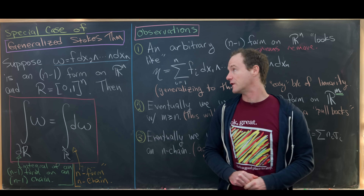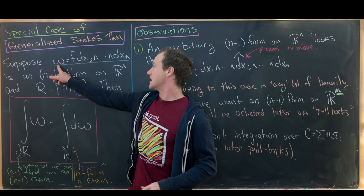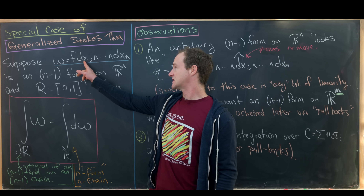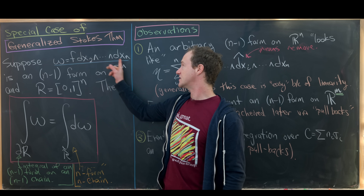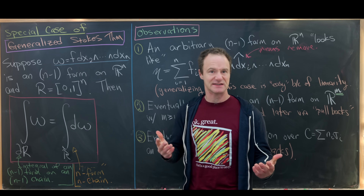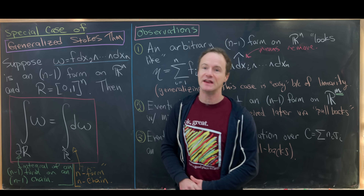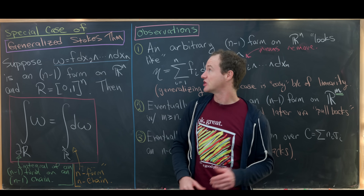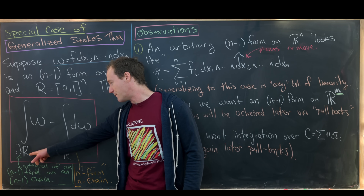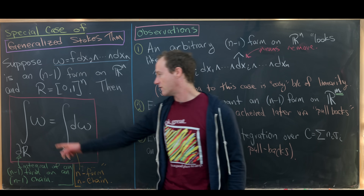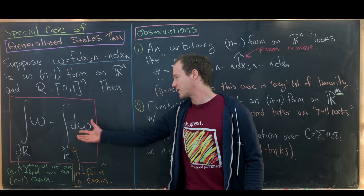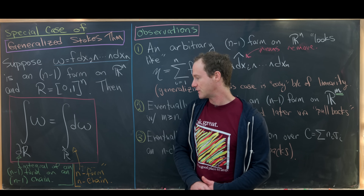Let's see exactly what we're going to prove in this video. Suppose that omega is the following n minus 1 form on R^n: it's f dx2 wedge dx3 wedge all the way up to dxn, where f is a differentiable function of n variables. Furthermore, we have R, which is our n-dimensional unit square. Then the generalized Stokes theorem in this case simplifies to the following statement: the integral over the boundary of the square — we'll call that del R — of omega, is equal to the integral over the square of d omega, where this is the so-called exterior derivative, which we did in previous videos.